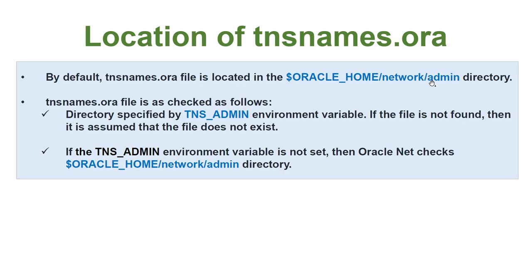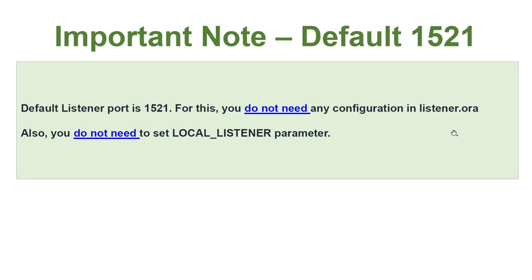If you don't use the TNS_ADMIN variable, by default Oracle will look for the file in Oracle Home network admin. The default port is 1521. For this port you do not need any configuration in listener.ora, neither do you need to set the local listener. If you don't create the listener.ora file, then by default when you run the command lsnrctl start, it will start the listener on port 1521. So to use the default listener you don't need any configuration at the database or listener.ora level.